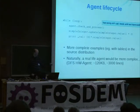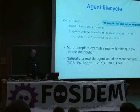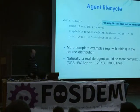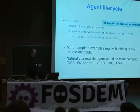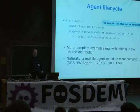This is very simple. There are of course more complete examples — for example, of tables in the source distribution. The real-life agent I wrote for internal use is about 120 kilobytes and 3,000 lines, because you want to do all the fancy stuff like daemonizing and logging and whatever.